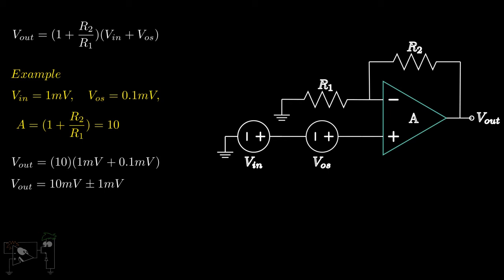So, we need to find a way to eliminate this offset voltage. The first thing we can do is use a high-precision op-amp. However, this can increase the cost of the circuit.